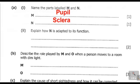We now come to question A2 right here. Question A2 reads: explain how N is adapted to its function. Part N — we have said that is the sclera. So how is the sclera adapted to its function?